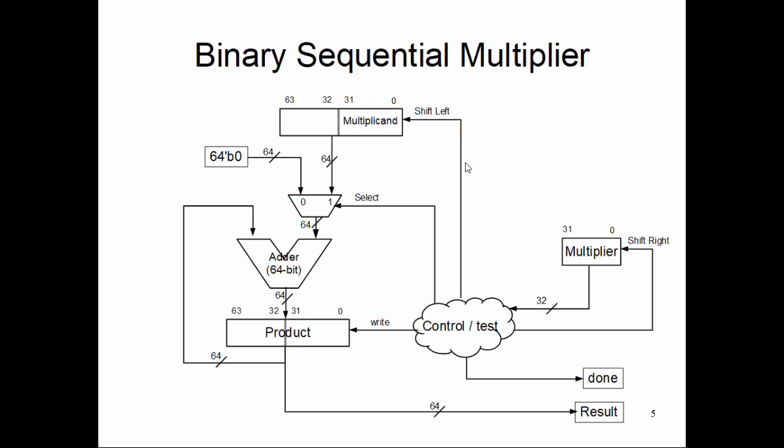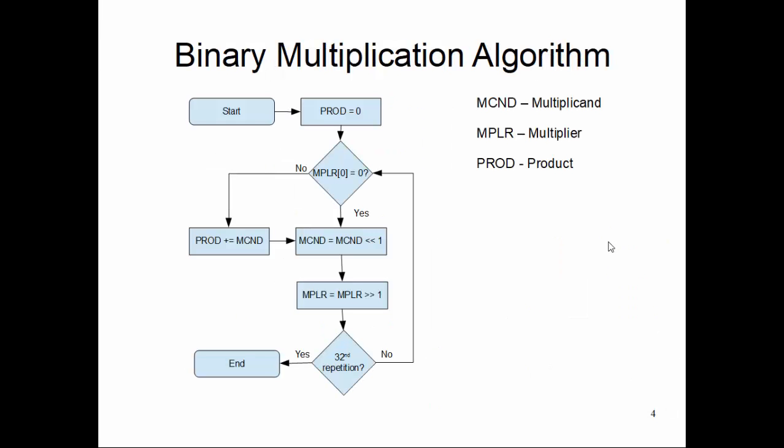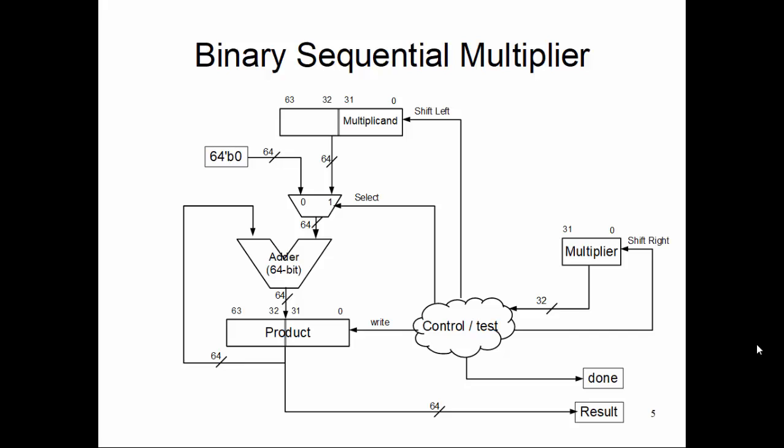Once the step is done, we need to left shift the multiplicand and right shift the multiplier. It issues left shift and right shift signals. In fact, these two can be done in one single clock cycle since the multiplicand and multiplier are two independent registers and can be shifted together. These two steps are done in one clock cycle.